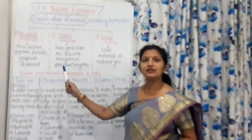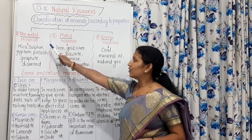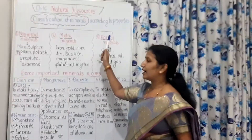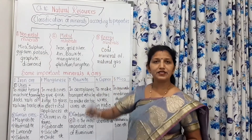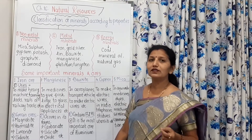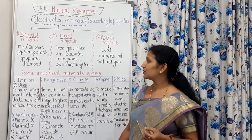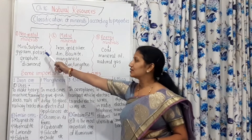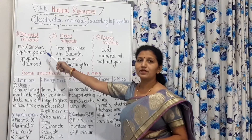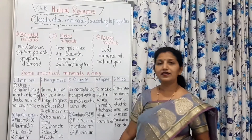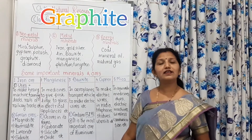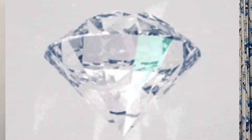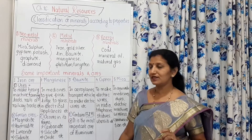There are three classes of minerals: non-metal minerals, metal minerals, and energy minerals. The examples of non-metal minerals are mica, sulphur, graphite, and diamond. These are not metals — they are non-metal minerals.